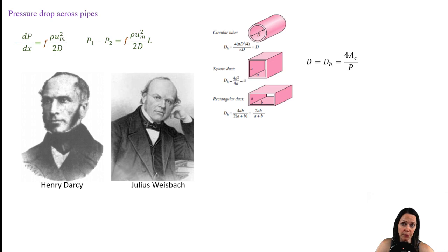If a non-circular pipe is used, the diameter d is replaced with the hydraulic diameter, which is defined as 4 times the cross-sectional area divided by the perimeter, not pressure.